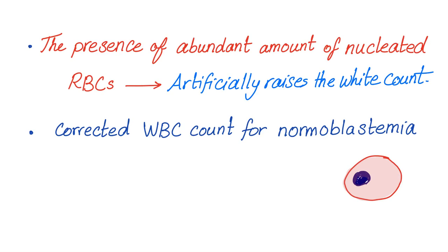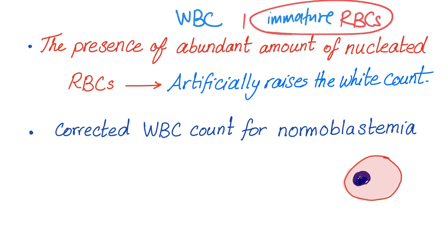The analyzer — the machine that measures the blood and gives you the complete blood count — cannot differentiate between white blood cells and immature red blood cells. The machine cannot tell the difference. So if these cells are increased, the white blood cell count will be increased. The solution is that the lab technician or pathologist has to look at them individually, manually, to make sure these cells are identified as immature red blood cells and not white blood cells.